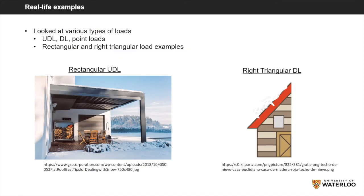In summary, we explored different kinds of loads in this lesson. We looked at uniformly distributed loads as well as distributed but non-uniform loads, applying the theory to two examples: one rectangular load and one triangular load. To conclude, two real-life examples are presented: a flat roof with a snow load representing a rectangular uniformly distributed load, and half of a snow-covered roof representing a right triangular distributed load.